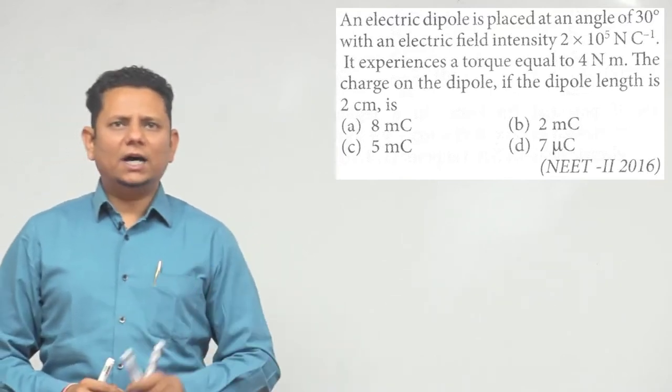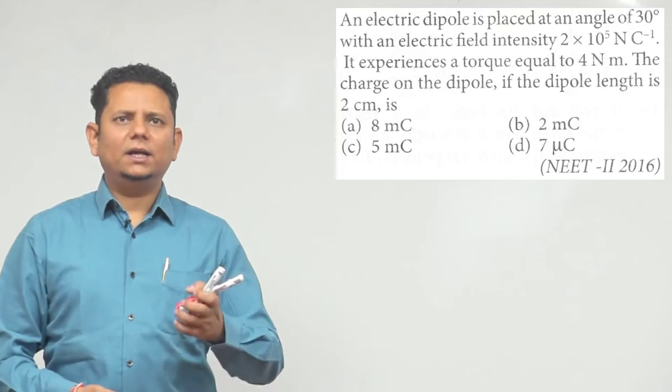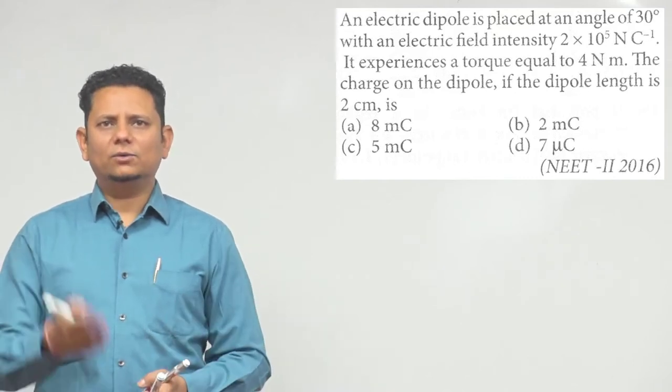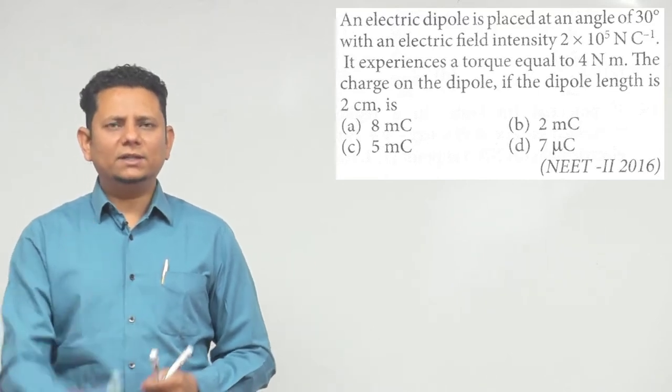We need to find the charge on the dipole if the dipole length is 2 centimeters. The options are 5 microcoulomb, 8 microcoulomb... sorry, 8 millicoulomb, 5 millicoulomb, 2 millicoulomb, or 7 microcoulomb.